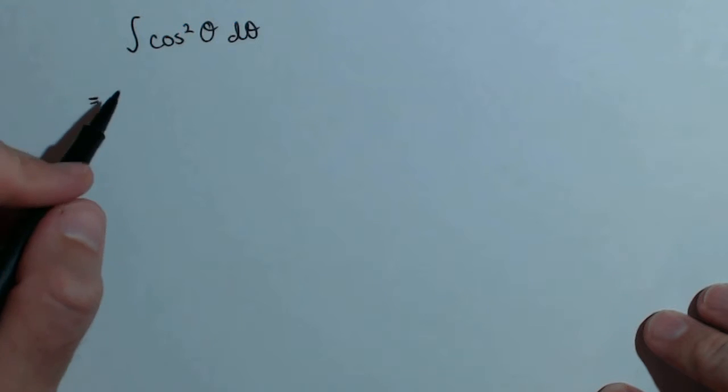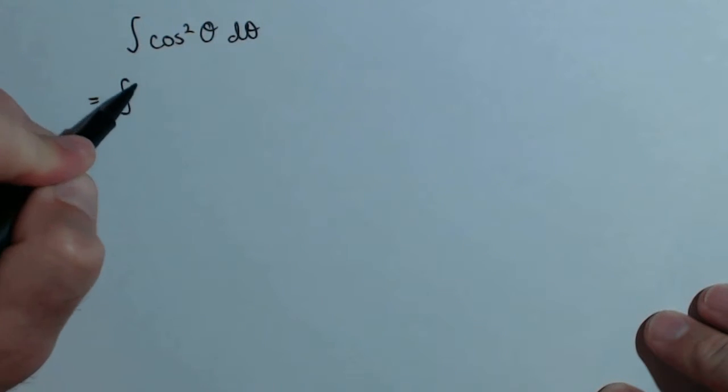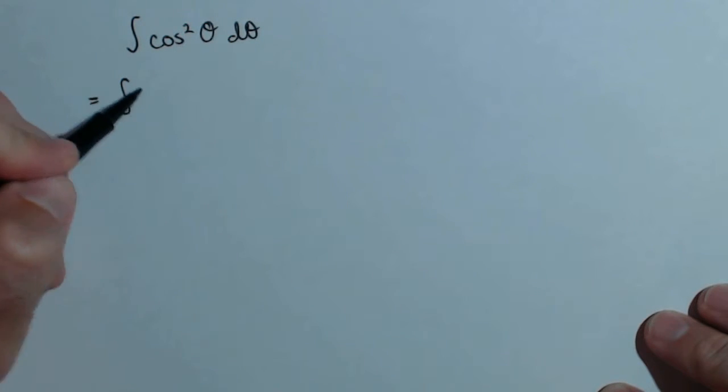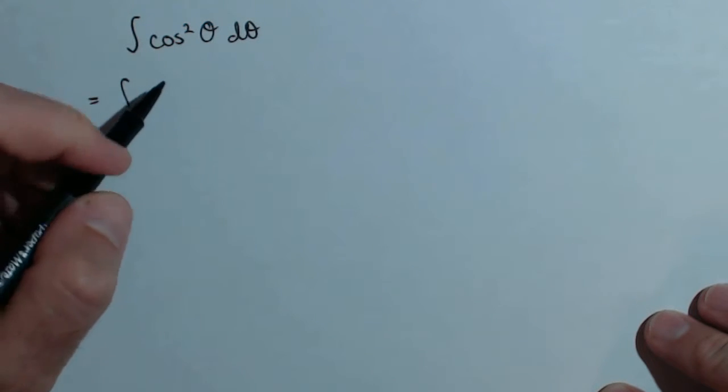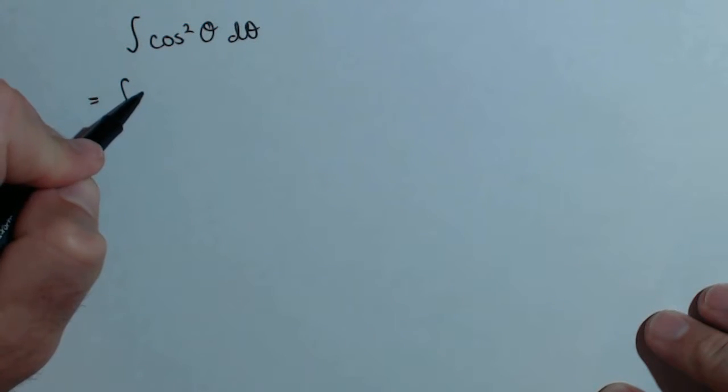To do cosine squared, the first thing we do is rewrite it using a half-angle identity that's solved for cosine squared.